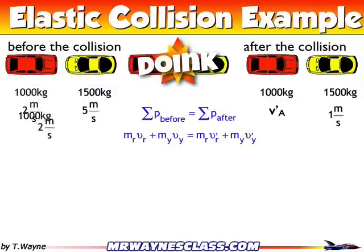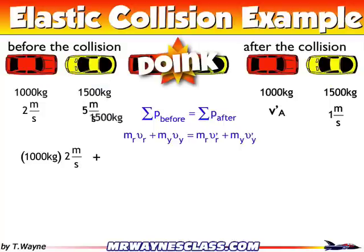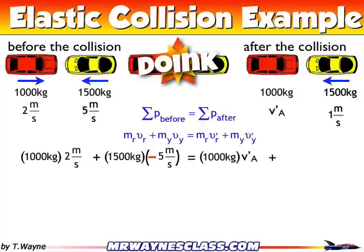Then I'll start pulling in the numbers. So 1,000 kilograms times 2 meters per second, plus 1,500 kilograms times negative 5 meters per second. The reason this is negative is because the yellow car is going in the opposite direction of the red car, and the negative sign means opposite direction — in this case, to the left. That equals the stuff after the collision: the 1,000 kilogram car times its unknown velocity, plus the 1,500 kilogram car times negative 1 meter per second, because that yellow car after the collision is also traveling to the left.